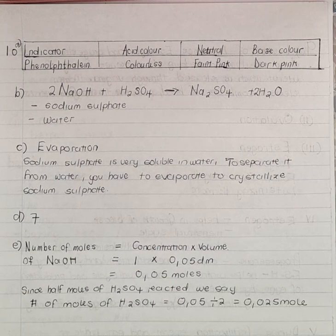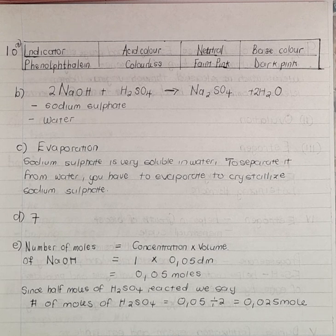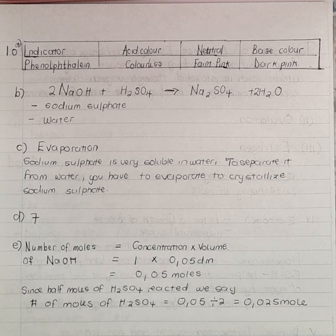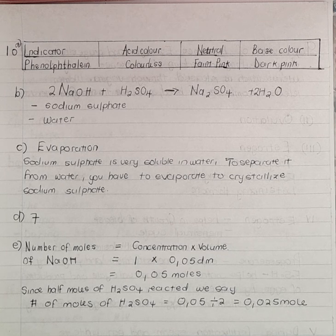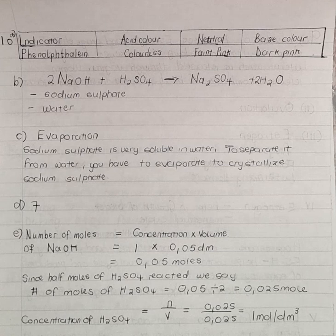We are given that the volume of sulfuric acid used was 25 cm³. To find the concentration, we say number of moles over volume. The number of moles of H₂SO₄ is 0.025, and the volume converted to dm³ is 0.025 dm³. So the concentration of sulfuric acid is 0.025 ÷ 0.025 = 1 mol/dm³.